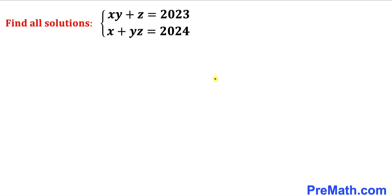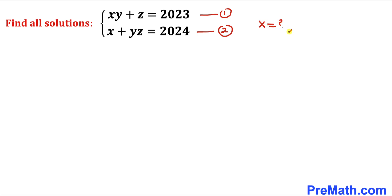Let's go ahead and get started with the solution. We'll label the first equation as equation number one and the second as equation number two, and now we are going to find the values of x, y, and z.